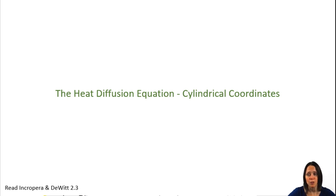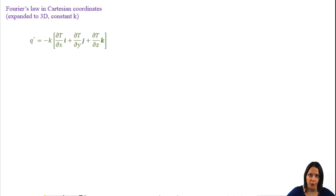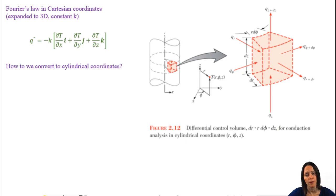In this video, we're going to take the equations we've learned so far for heat conduction and put them in cylindrical coordinates. So let's start with Fourier's law in Cartesian coordinates. How do we convert this to cylindrical coordinates?